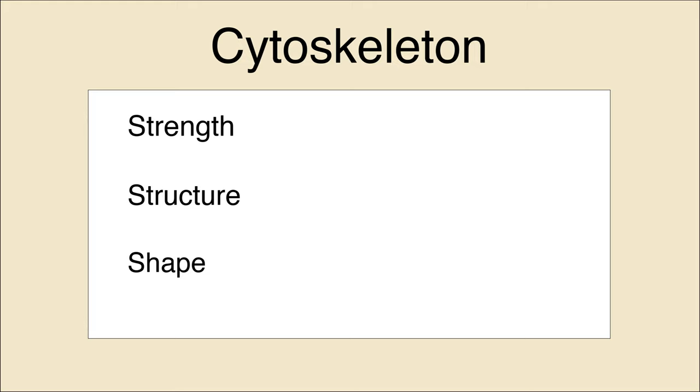In other places in the cell, the cytoskeletal filaments are like roads that motor proteins use to transport cell products and vesicles. And finally, during certain processes such as cell division, cytoskeletal filaments assemble and disassemble to enable the cell to move and contract.